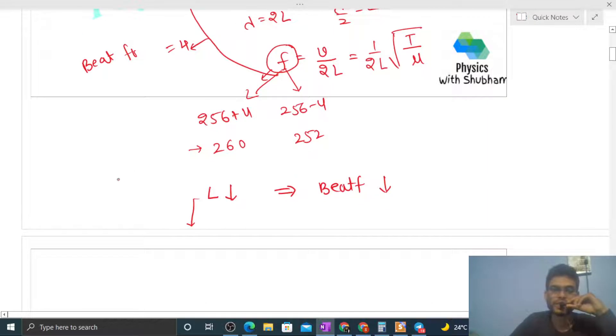Now when length decreases, let's see this formula for f. f equals 1/(2L) times square root of T by mu. Here we won't change tension and linear mass density. When we decrease length, then the frequency of the wire will increase, because frequency is inversely proportional to length.